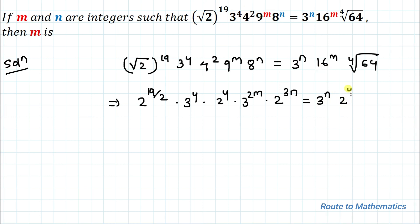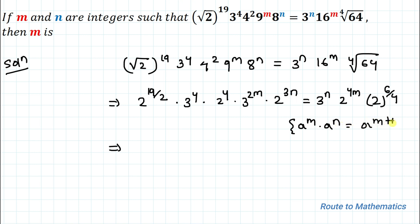Similarly, on the right side we have 3 to the power n. 16 can be written as 2 to the power 4, so 16 to the power m becomes 2 to the power 4m. And 64 is 2 to the power 6, with the 4th root meaning the exponent is multiplied by 1/4. Now we will apply the exponential product rule: a to the power m multiplied with a to the power n equals a to the power (m + n), so if we have the same base, the powers get added.